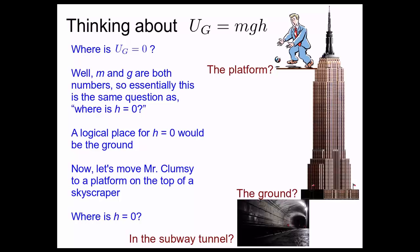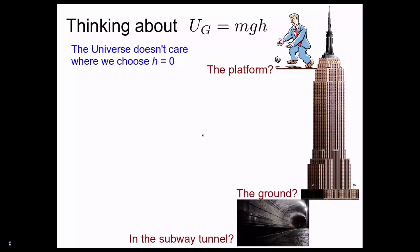Which of these should we choose for h equals zero? Or, which of these should we choose for the zero of gravitational potential energy? Well, the universe doesn't care where we choose h to be equal to zero.